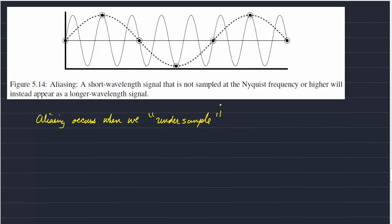In other words, if our sample interval is coarser than the signal, than the true signal.